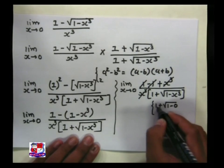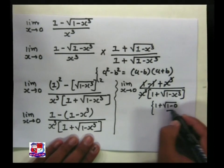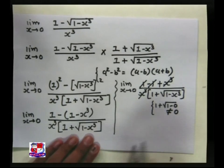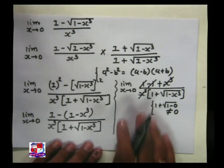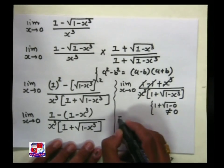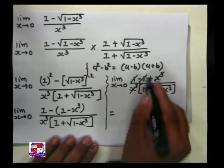x cube becomes 0, so here 1 plus under root 1. Finally we can say this does not equal to 0 and you can replace the limit.